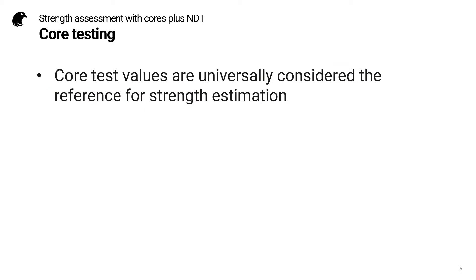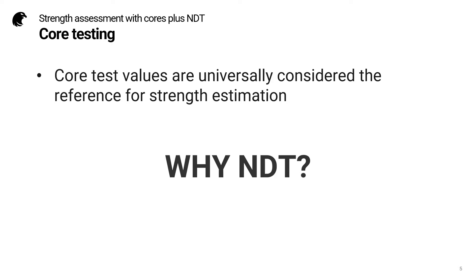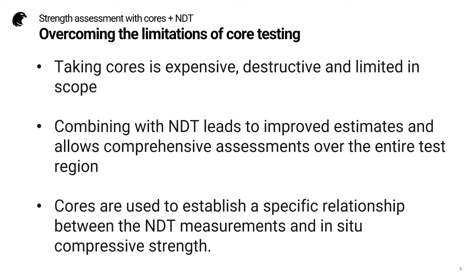As we already mentioned in part 1 of this series, core test values are universally considered the reference for strength estimation. So why NDT? In parts 1 and 2, we showed how NDT can improve the strength estimation based on cores. In this part, we will see how we can overcome the limitations of core testing. Taking cores is expensive, destructive, and limited in scope. Combining with NDT leads to improved estimates and allows comprehensive assessments over the entire test region. Cores are used to establish a specific relationship between the NDT measurements and in-situ compressive strength.